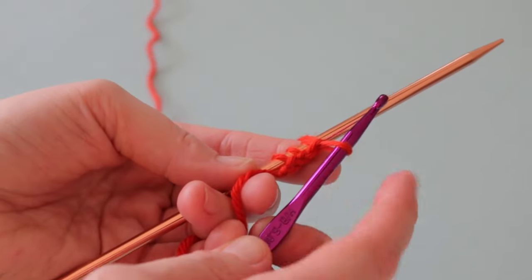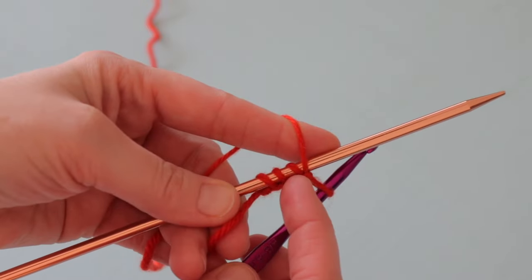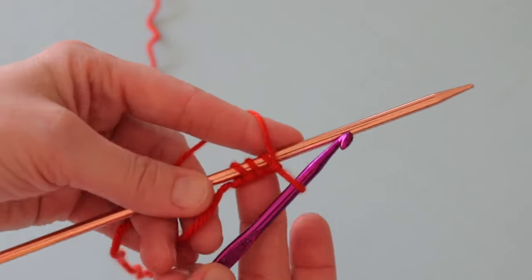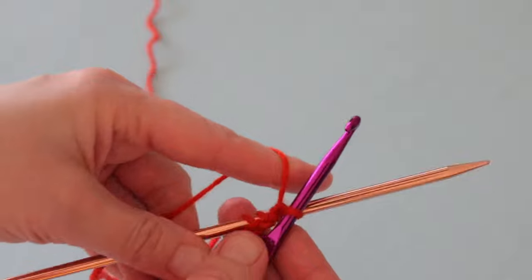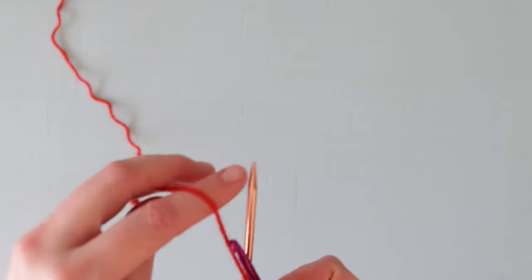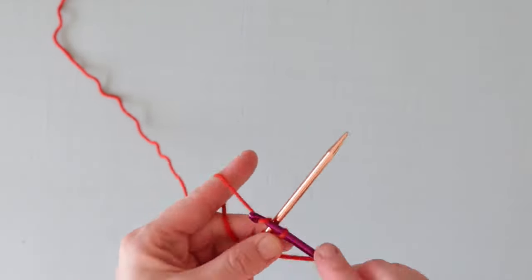Right now we have our working loop and one, two, three stitches cast on the needle. Let's keep going for a little while. I'm going to speed up the video here to get to the next important part.